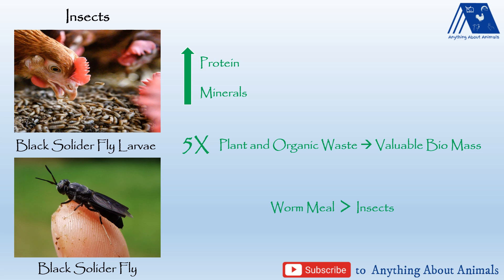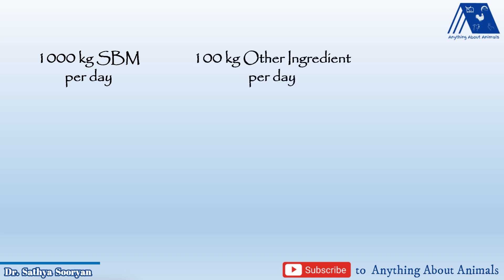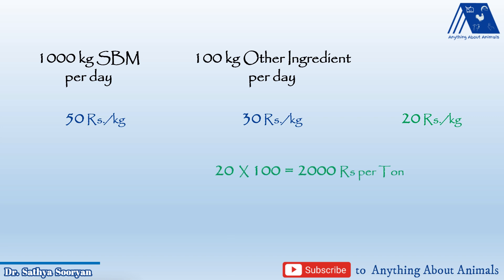These are all the ingredients — plant origin, alternative plant origin, and animal sources — which you can use instead of soybean meal. There are a few constraints keeping them from being used in full quantity, but we can use them as partial replacements. For example, if you are using one ton of soybean meal per day and you replace only 10 percent — 100 kg — with fish meal or groundnut cake, and soybean meal costs 50 rupees per kg while the replacement costs 30 rupees per kg, you will save around 20 rupees per kg, which equals 2000 rupees saved per ton.